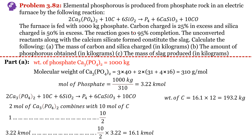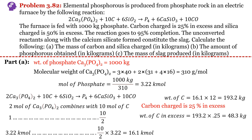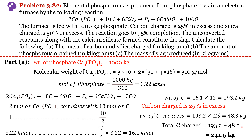Carbon is charged at 25% in excess. Excess carbon = 25% of 193.2 = 48.3 kg. Total carbon charged = theoretical amount + excess = 193.2 + 48.3 = 241.5 kg.